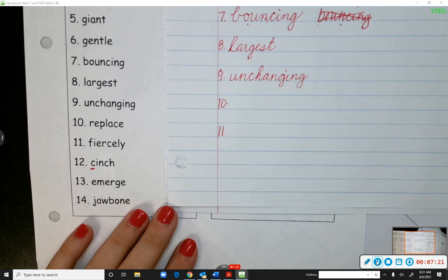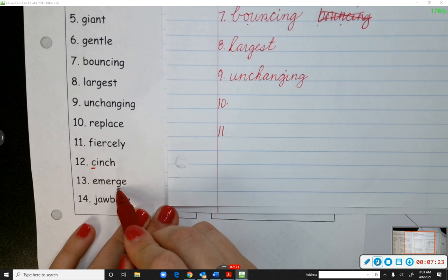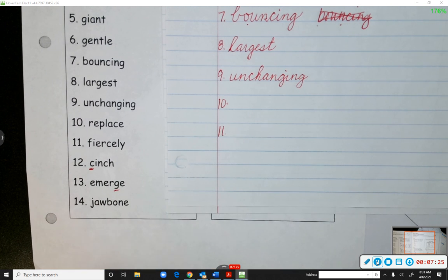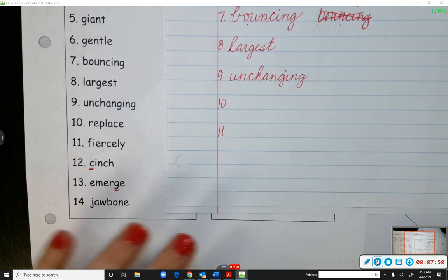Emerge, number 13. Emerge. Do we know what emerge means? What does emerge mean? Is that one of your vocabulary words too? It means to come up out of something. So they emerge, we come up out of the pipe. We come up out of the hole. The water will emerge once we turn it on. Okay, so emerge means to come up. Okay?